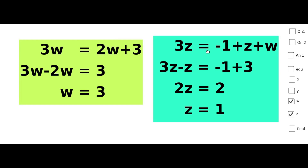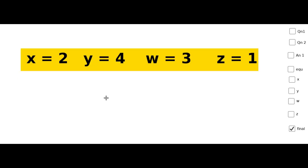From 3z = -1+z+w: taking z to the left side, 3z-z = -1+w. Since w = 3, we get 2z = -1+3 = 2, therefore z = 1. Thus the values obtained are x = 2, y = 4, w = 3, and z = 1.